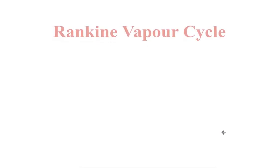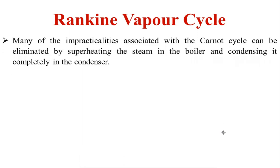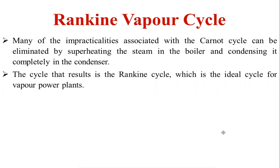Welcome all to the second video. Today I am going to explain regarding the Rankine Vapor Power Cycle. Many of the impracticalities associated with the Carnot Vapor Power Cycle can be eliminated by superheating the steam in the boiler and condensing completely in the condenser. The cycle that results is called the Rankine Cycle.